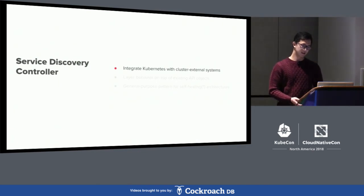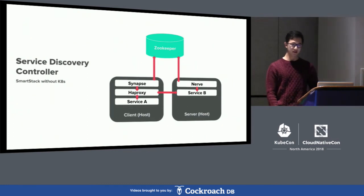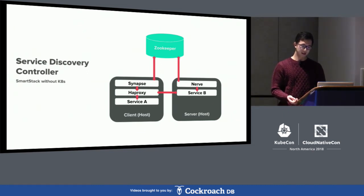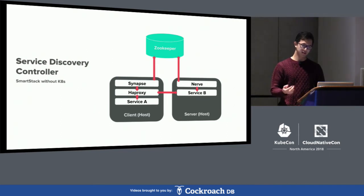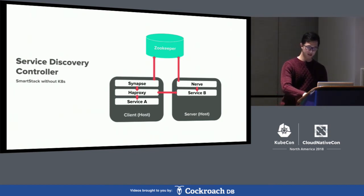Now we'll talk about some custom controllers we built. First, we have a service discovery controller, which we built to integrate Kubernetes with our externally existing systems — specifically SmartStack, our existing service discovery framework. SmartStack is an open source service discovery framework. It uses ZooKeeper as a distributed key-value store. On the client side, Synapse polls ZooKeeper for backends for a particular service and uses that list to configure a HAProxy, which does actual load balancing. On the server side, Nerve continually health checks the server and ensures the service's backend is available or removed from ZooKeeper based on health.